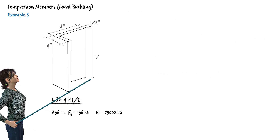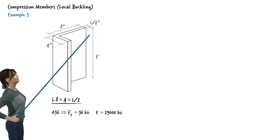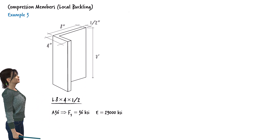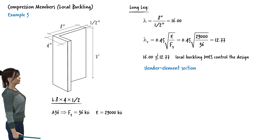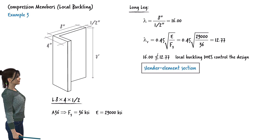Suppose the column uses a thinner standard section, L8×4×1/2. The width-to-thickness ratio of the longer leg equals 16. Since lambda is greater than lambda_r, we need to consider the effect of local buckling on the overall buckling strength of the column. We refer to sections that don't satisfy the limiting ratio as slender element sections. So L8×4×1/2 with a yield stress of 36 KSI is a slender element section.